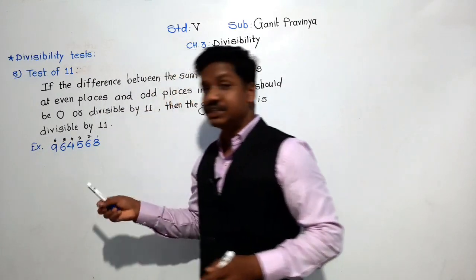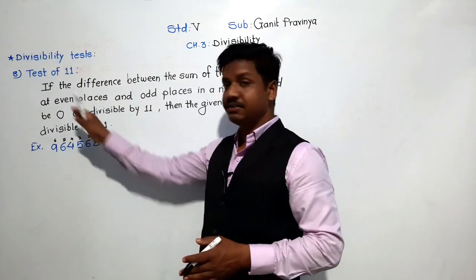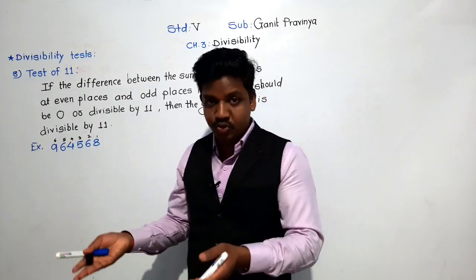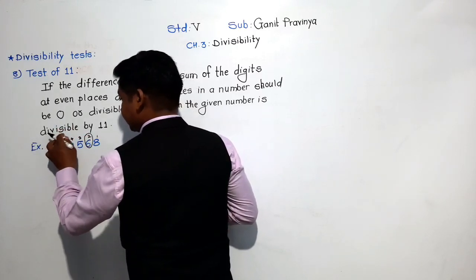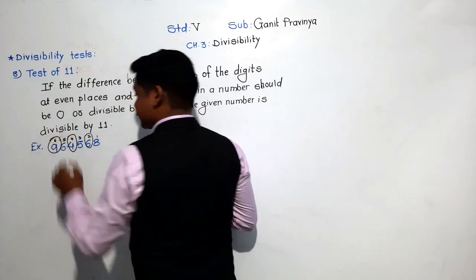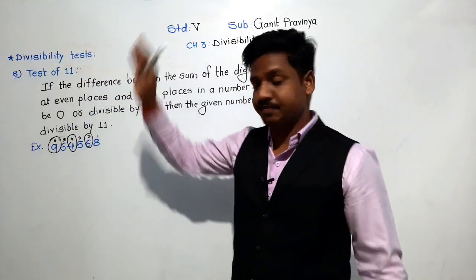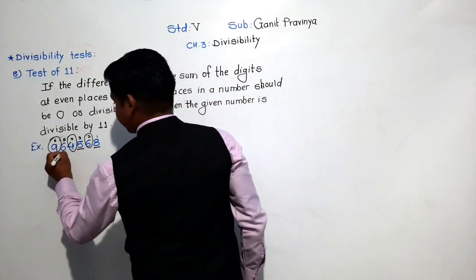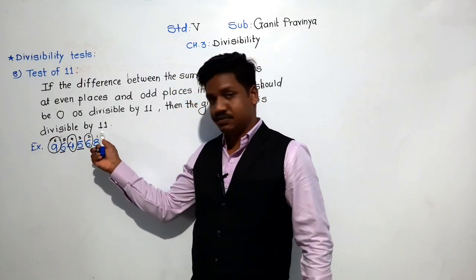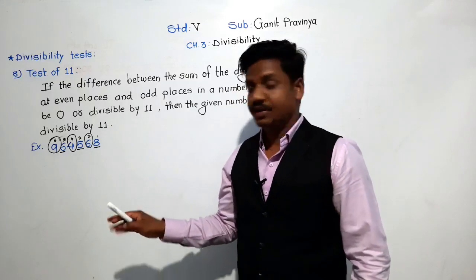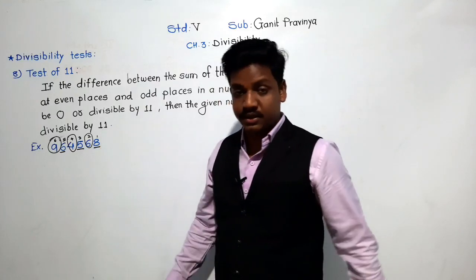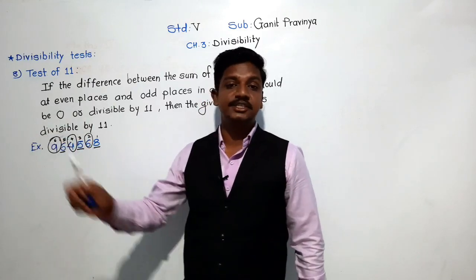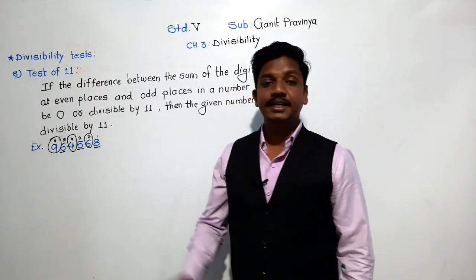Even places are positions 2, 4, and 6. Odd places are positions 1, 3, and 5. The digits at even places are those at the 2nd, 4th, and 6th positions from the right, and the digits at odd places occupy the 1st, 3rd, and 5th positions. We need to find the sum of each group.